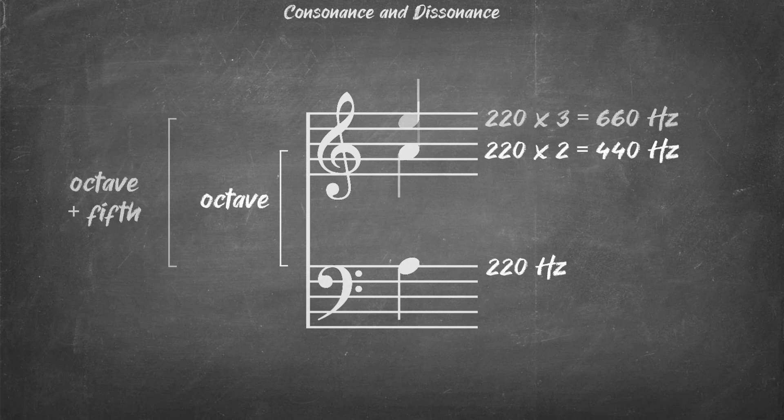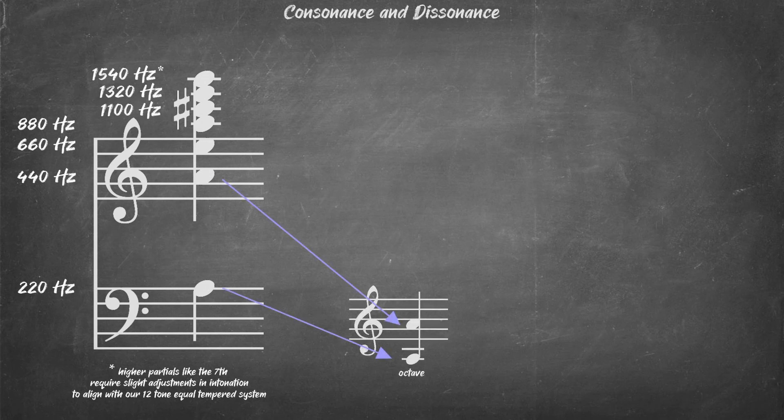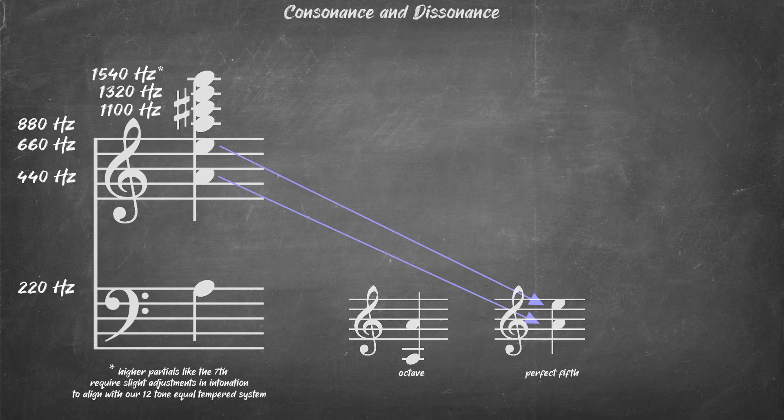And then if I add another 220Hz, I get 660Hz, which is almost precisely the E, an octave and a fifth above the first A. There are a number of consonant relationships between notes within the 12-tone equal-tempered system, if you're strictly looking at mathematical relationships and ratios.